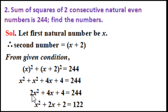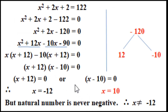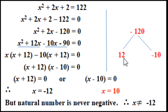Dividing both sides by 2: x squared plus 2x plus 2 equals 122. Rearranging: x squared plus 2x plus 2 minus 122 equals 0, and since plus 2 minus 122 equals minus 120, we get x squared plus 2x minus 120 equals 0. Now we solve this quadratic equation by factorization.